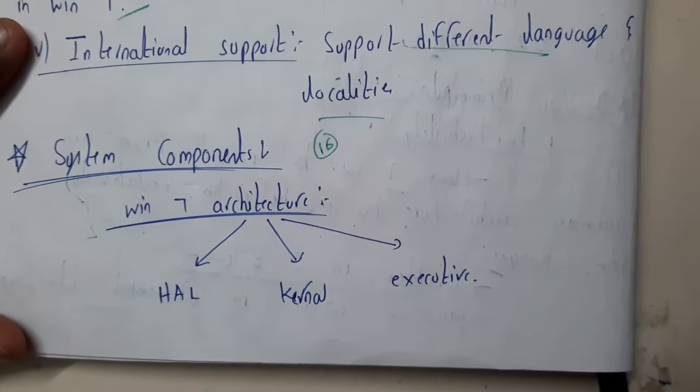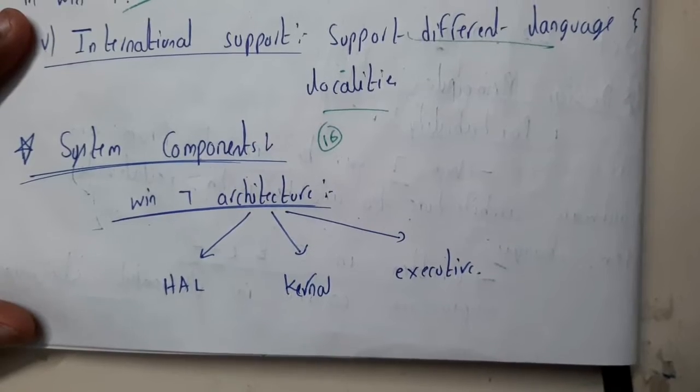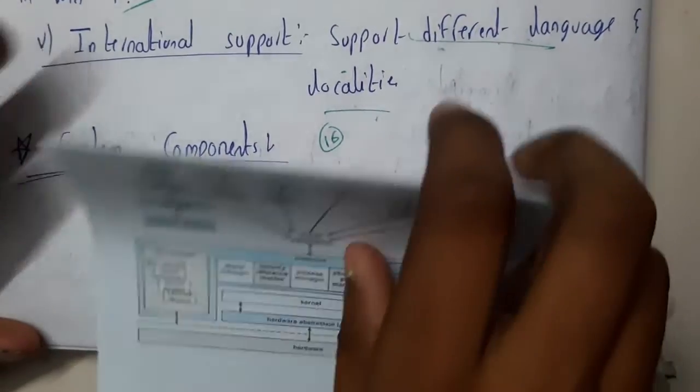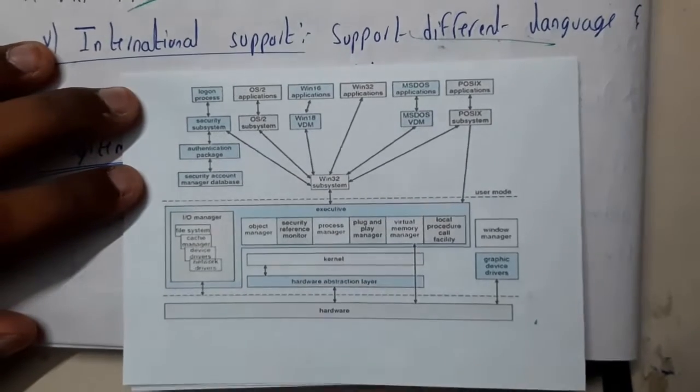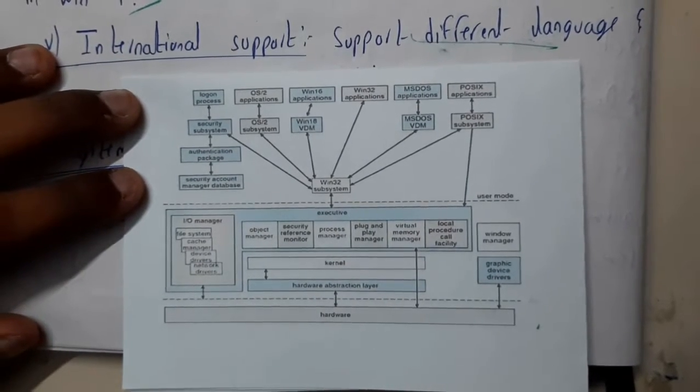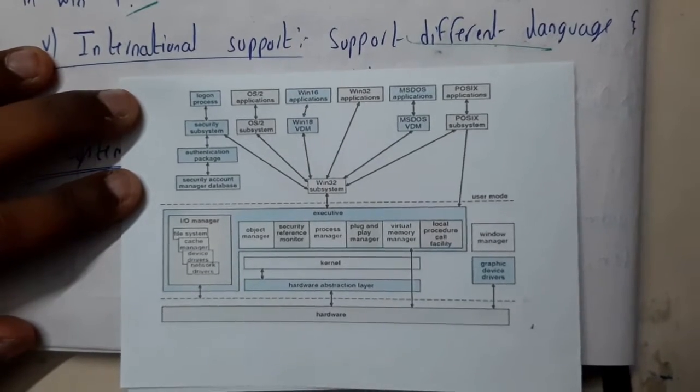Hello guys, we are back with our next tutorial. In this tutorial, let us go through system components of Windows 7, which is the basic architecture. In the previous tutorial, I told you that the Linux architecture will seem a bit easier. This is the diagram for Windows 7 architecture.